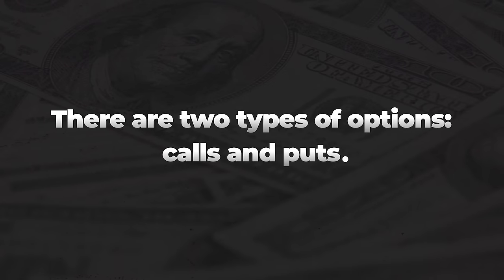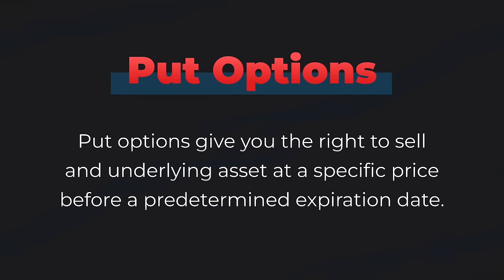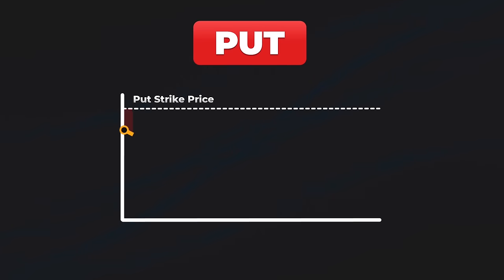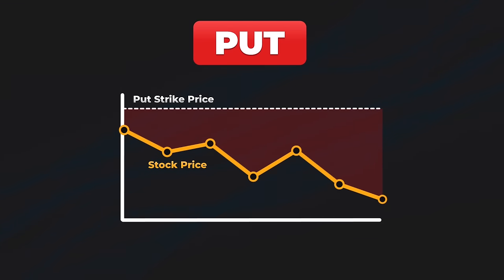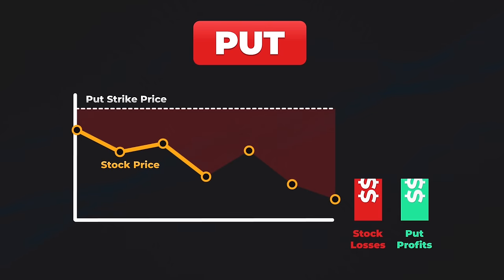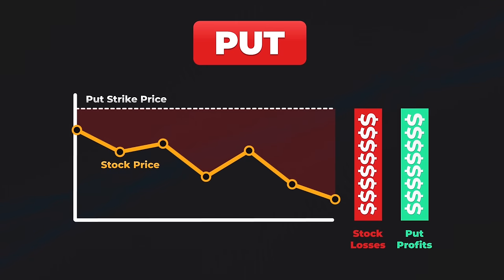There is a second type of option called put options. Put options give buyers the right but not the obligation to sell an underlying asset such as a stock at a specific price before a predetermined expiration date. When traders believe that the price of a stock will plummet before a specific date, they can buy put options to profit from the declining stock price. Or if they have an existing stock position, traders can buy put options to offset losses should the stock price decline.